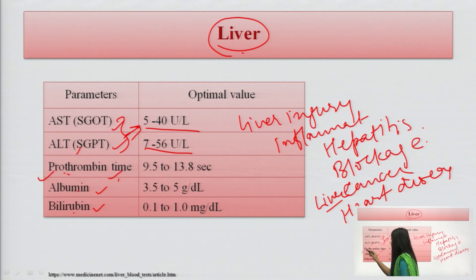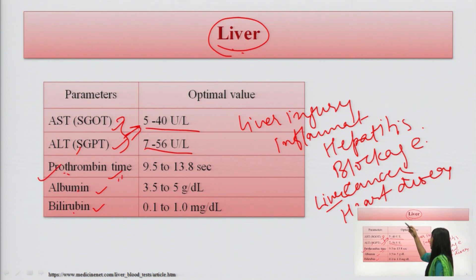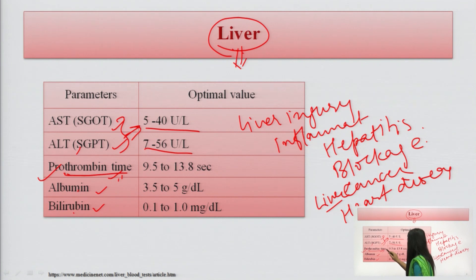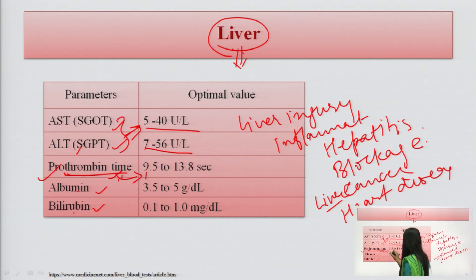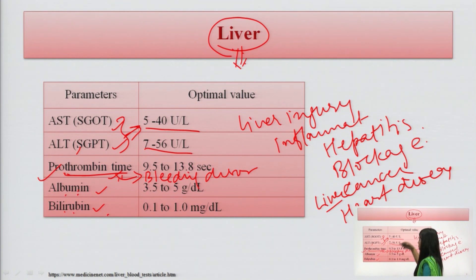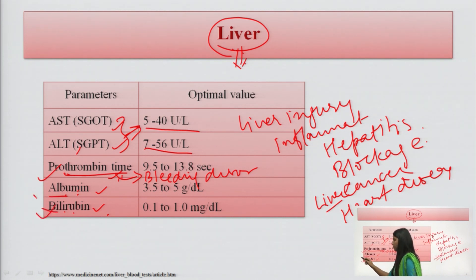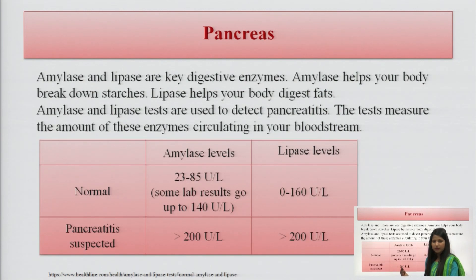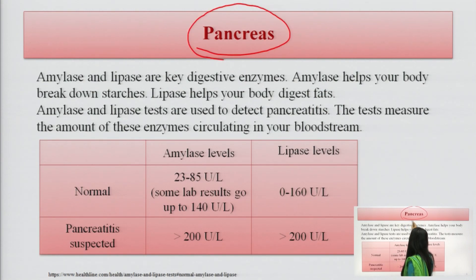Prothrombin time is affected because clotting factors are produced in the liver; it is also used to check bleeding disorders. Albumin is also formed in the liver, so if the liver is damaged or injured, albumin levels will be either increased or decreased. Bilirubin is also formed in the liver, and its levels will be disturbed in liver conditions.